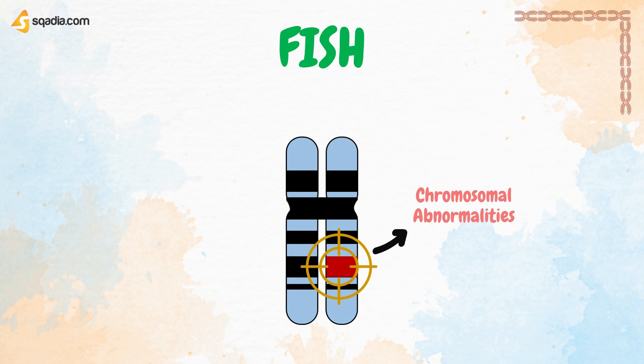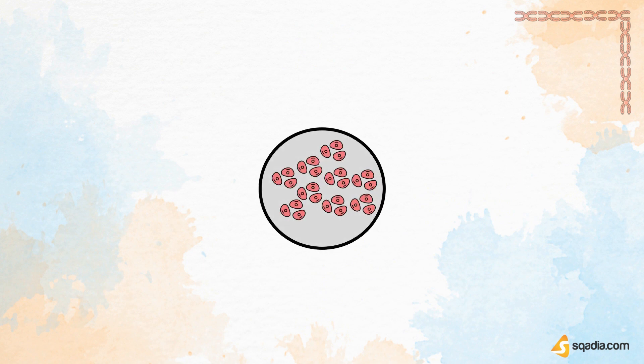Now let's discuss the steps of FISH, or Fluorescent In Situ Hybridisation. The first step is the fixation of the cell, through formaldehyde.